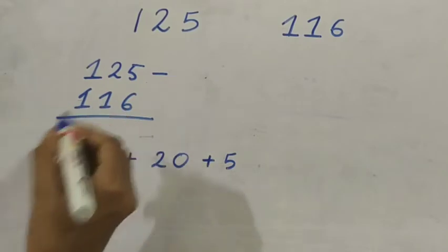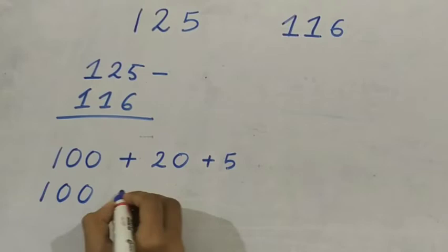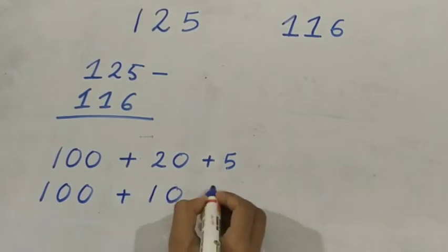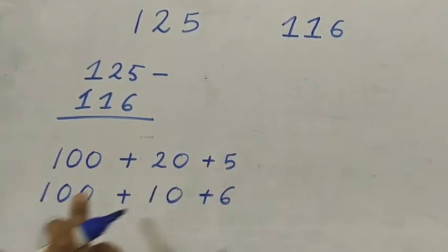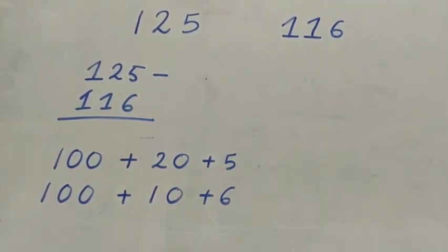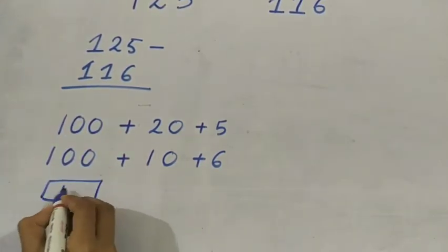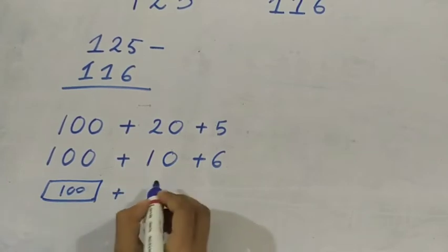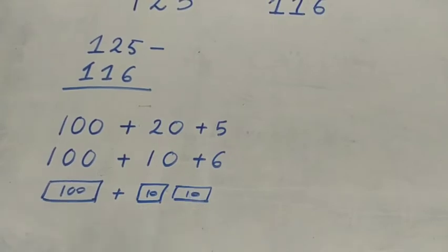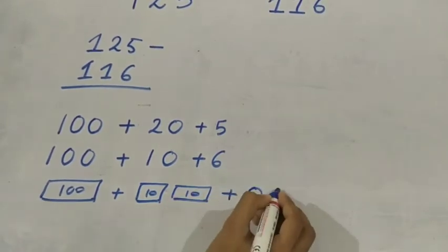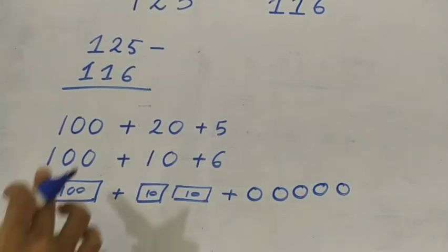Now, 116 — how will I write that? 100 plus 10 plus 6. These are the numbers: 125 and 116. Suppose I have a 100 rupee note, then 2 ten-rupee notes, and 5 one-rupee coins. That is 125.